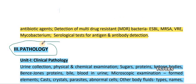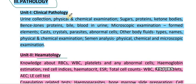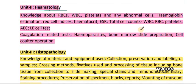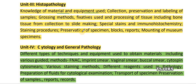Next is pathology. Unit 1 is clinical pathology covering sugars, proteins, ketone bodies, Bence Jones protein, bile, blood, urine, and microscopic examination. Unit 2 is hematology: blood, RBC, WBC, platelets, abnormal cells, and related concepts. Unit 3 is histopathology — knowledge of materials, equipment used for collection, preservation, labeling, sampling, grossing methods, and fixation.